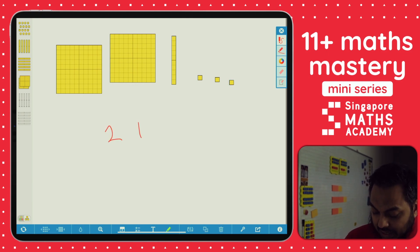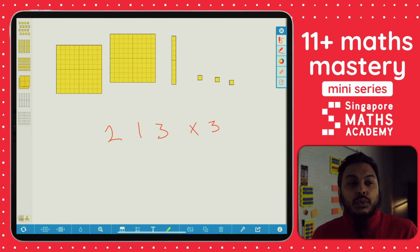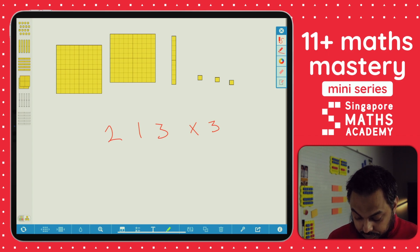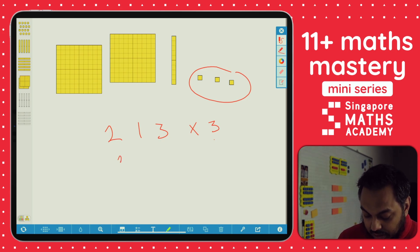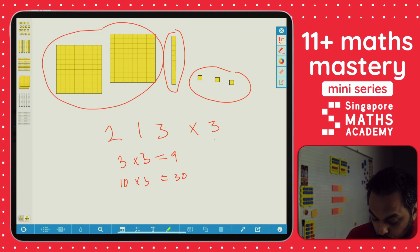We've got two lots of hundreds, one ten, and three ones. We want to multiply this by three, 213 times three. When we put 213 times three, what we're really saying is we want to multiply the three ones by three. So what's three times three? We know that. Three, six, nine. So three times three is nine. So 213 times three is going to be three times three, which is equal to nine. Then we've got one ten here, 10 times three, which we know is 30. And we've got 200 here. 200 times three - we know two times three is six, so 200 times three is going to be 600.